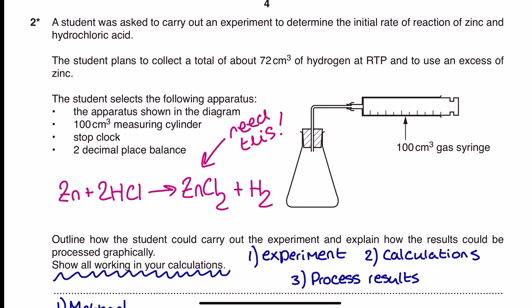A student was asked to carry out an experiment to determine the initial rate of reaction of zinc and hydrochloric acid, and the student plans to collect a total of about 72 cm³ of hydrogen at room temperature and pressure in this 100 cm³ gas syringe just here, and they're going to use an excess of zinc reacting in this conical flask down there. We're also told that they use a 100 cm³ measuring cylinder, which hasn't been shown in the apparatus, a stop clock, and a two decimal place balance that's also not been demonstrated in this little setup just here.